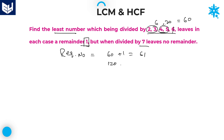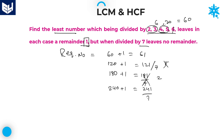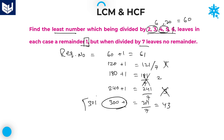Go with the second multiple: 120 plus 1 is 121. Check whether 121 is divisible by 7. 7 goes once, remainder 51. Not divisible. Third multiple: 180 plus 1 is 181 divided by 7. 7 twos are 14, remainder 41. Not divisible. Fourth multiple: 240 plus 1 is 241 divided by 7. 7 threes are 21, remainder 31. Not divisible. Next: 300 plus 1 is 301 divided by 7. 7 fours are 28, remainder 21. 7 threes are 21. So 301 is exactly divisible by 7.